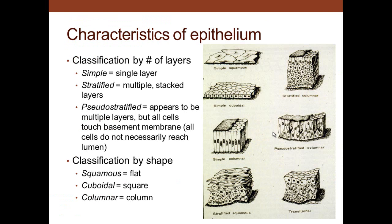Epithelium has different shapes, and you can classify them based on their shape. If it's a single cell layer, we call it simple — one layer. If it's more than one, we call it stratified. Or it could be pseudo-stratified, meaning it looks like more than one layer but all cells touch the base — usually pseudo-stratified columnar epithelium. You then classify the cells at the surface: if they're flattened, they're squamous; if they're cube-shaped, they're cuboidal; if there's more cytoplasm above the nucleus than between nuclei, they're columnar.